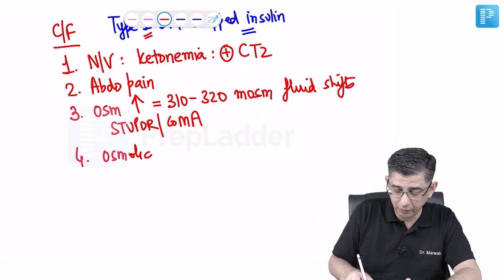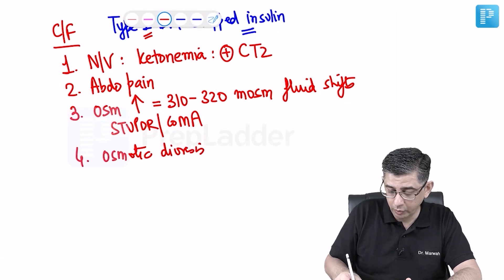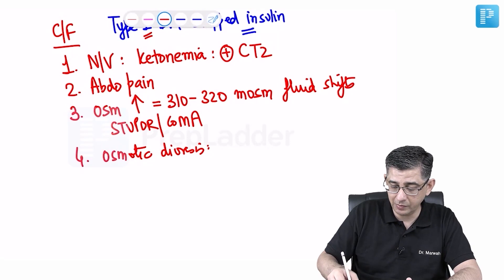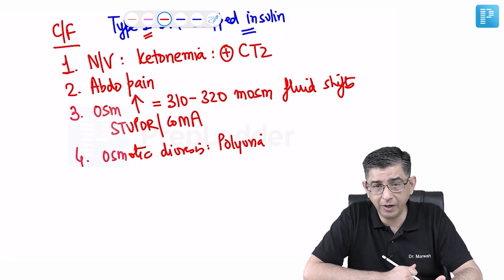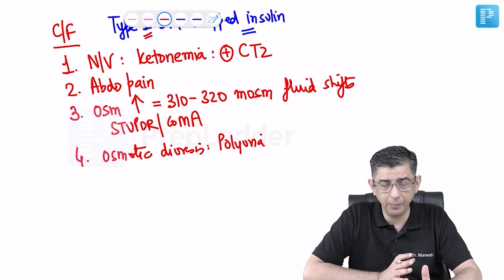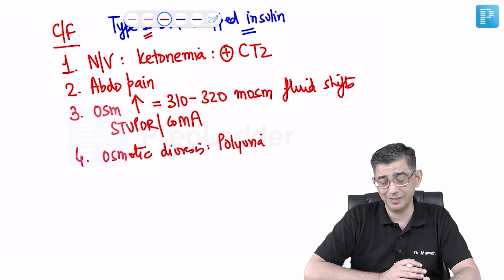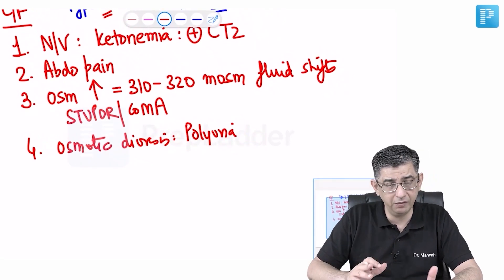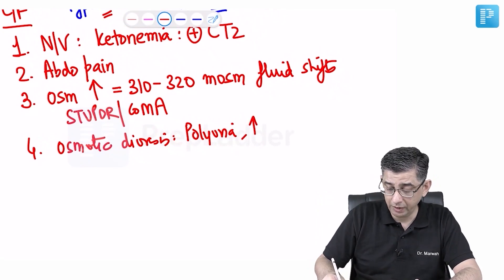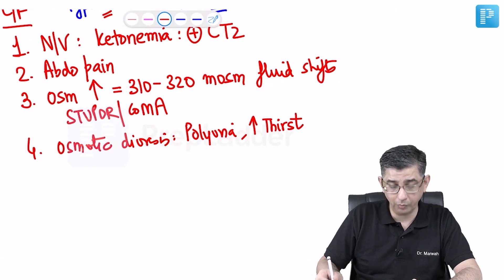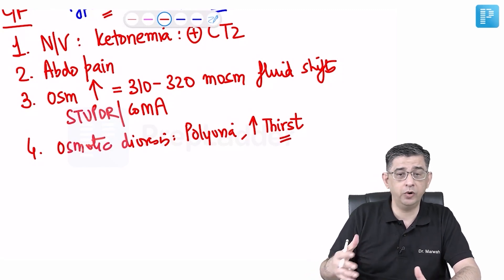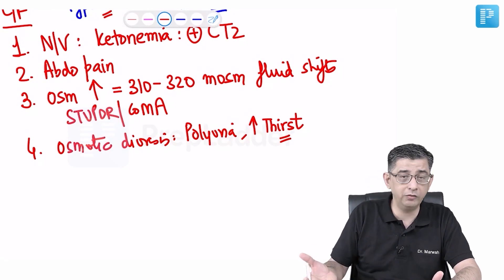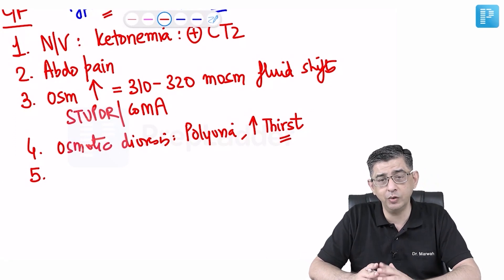High blood sugar also contributes to osmotic diuresis, causing polyuria. If an unconscious, unresponsive Type 1 diabetes mellitus patient is admitted, a Foley's catheter or condom catheter would be placed and the bag fills up quickly, reflecting extensive diuresis — polyuria being defined as more than 3 liters per day. If the patient was conscious early in the disease, family members might report the child was asking for water repeatedly before losing consciousness.